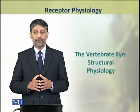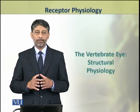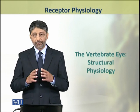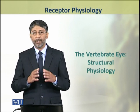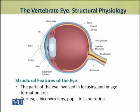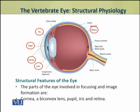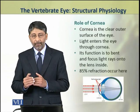Dear students, in this topic we shall discuss the structural physiology of the vertebrate eye. The eye has different components involved in focusing and image formation. These parts include the cornea, a bi-convex lens, a pupil, an iris, and the retina. We shall discuss the roles of these parts in detail.